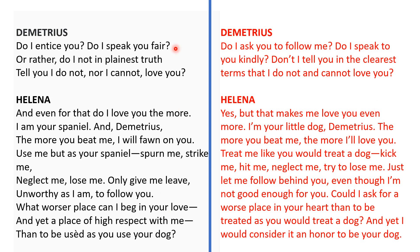Demetrius asks Helena, after he's been following her through the forest: 'Do I entice you? Do I speak you fair? Or rather, do I not in the plainest truth tell you I do not nor I cannot love you?' Demetrius is confused — he's asking: do I ask you to follow me? Do I speak to you kindly? Don't I tell you in the clearest terms that I do not and cannot love you? Demetrius seems really frustrated as to why Helena is still chasing him when he's made it blatantly obvious that he doesn't love her.